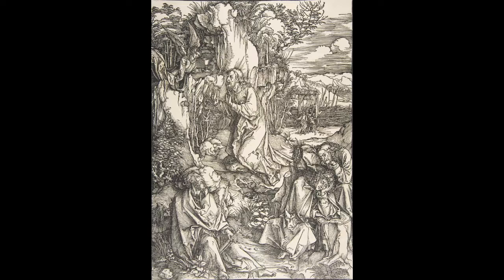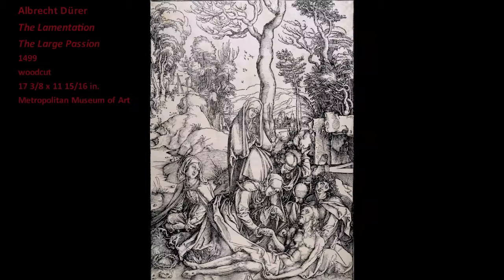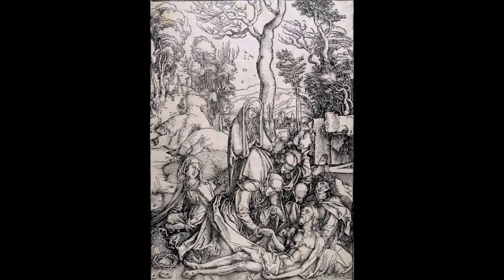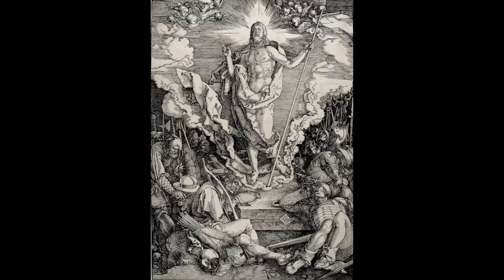For example, Christ seems to float above his disciples rather than solidly occupying a space behind them. The Lamentation, also from the Large Passion, completed in 1499, demonstrates how Dürer had solved this problem of creating a convincing illusion of three-dimensional pictorial space. Dürer's visual method draws the viewer into the scene to join those who mourn the dead Christ. In the Resurrection, Christ seems to be stepping out of a spiritual space into the natural world of the soldiers who are in various states of slumber and awe. This work demonstrates that by 1510, Dürer had so thoroughly mastered the use of pictorial space that he was able to work creatively with it.